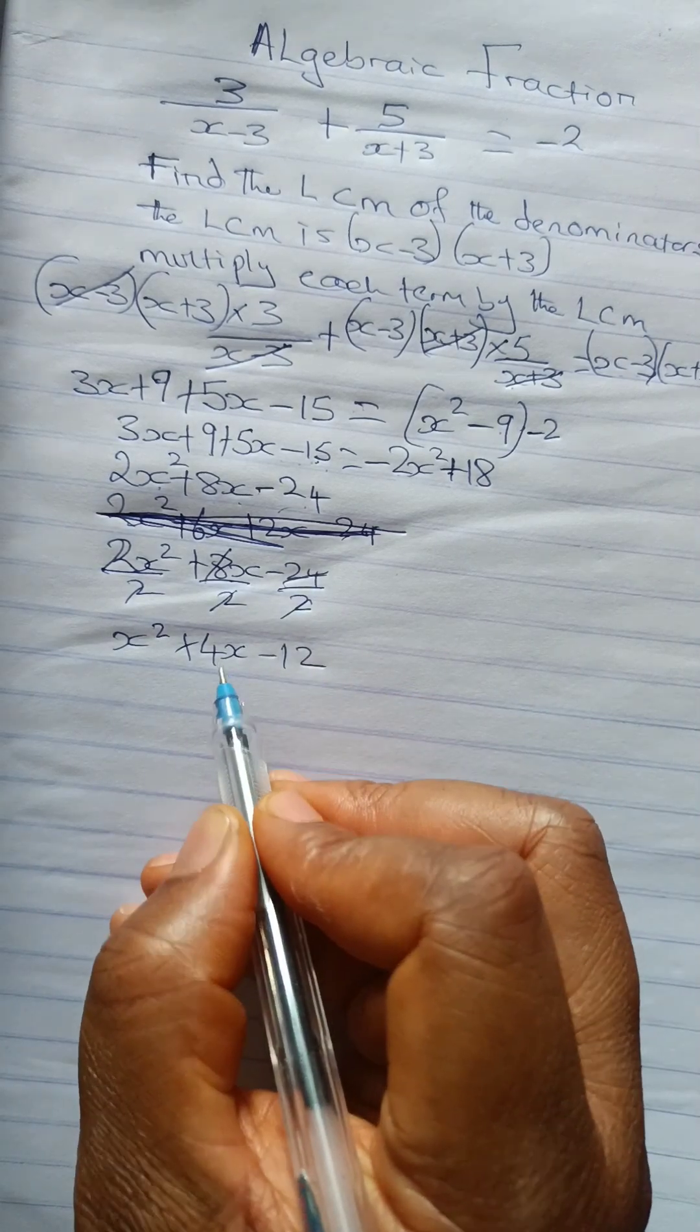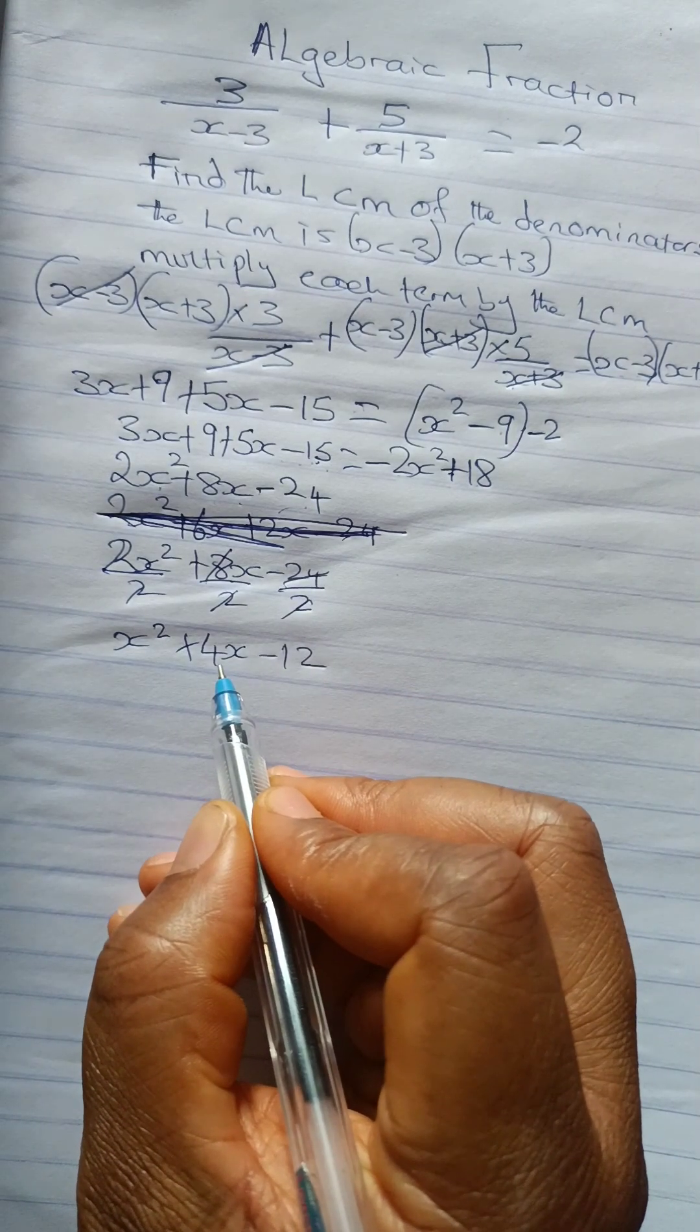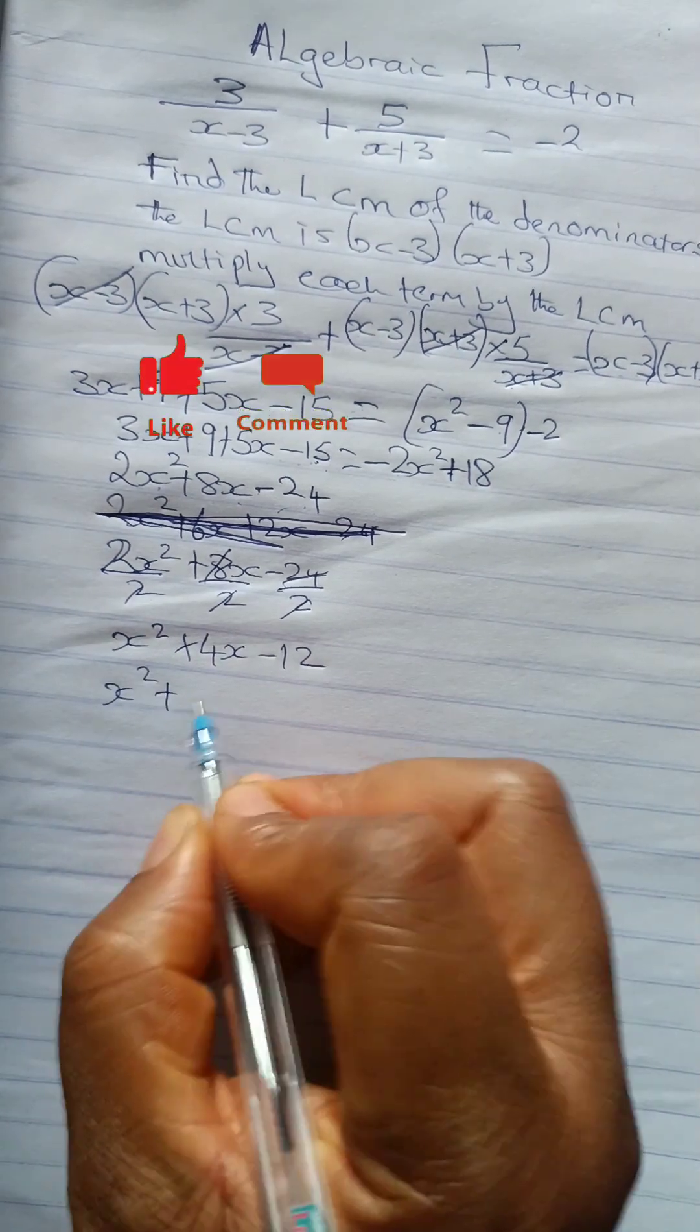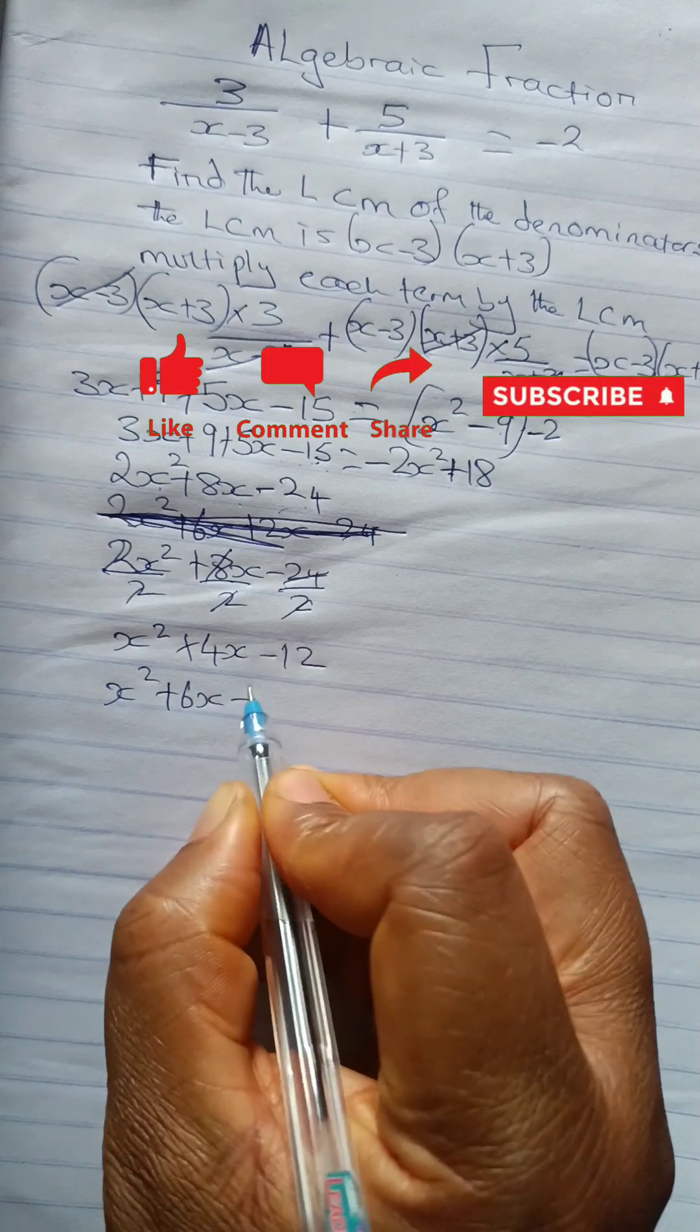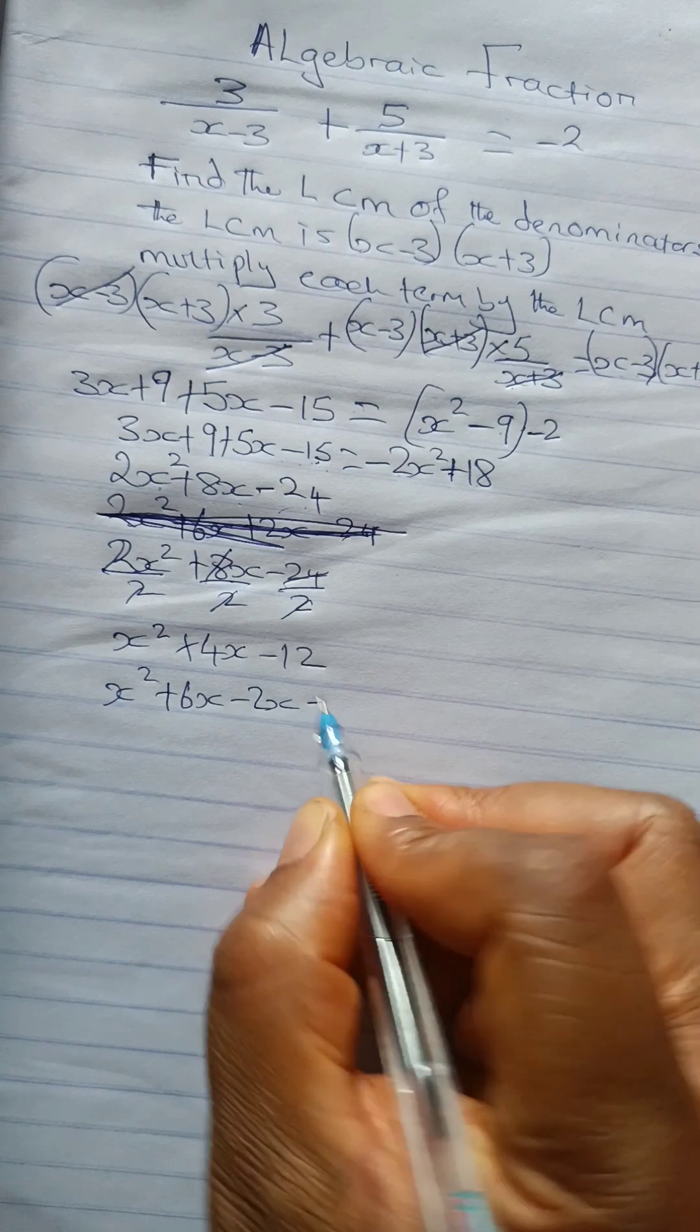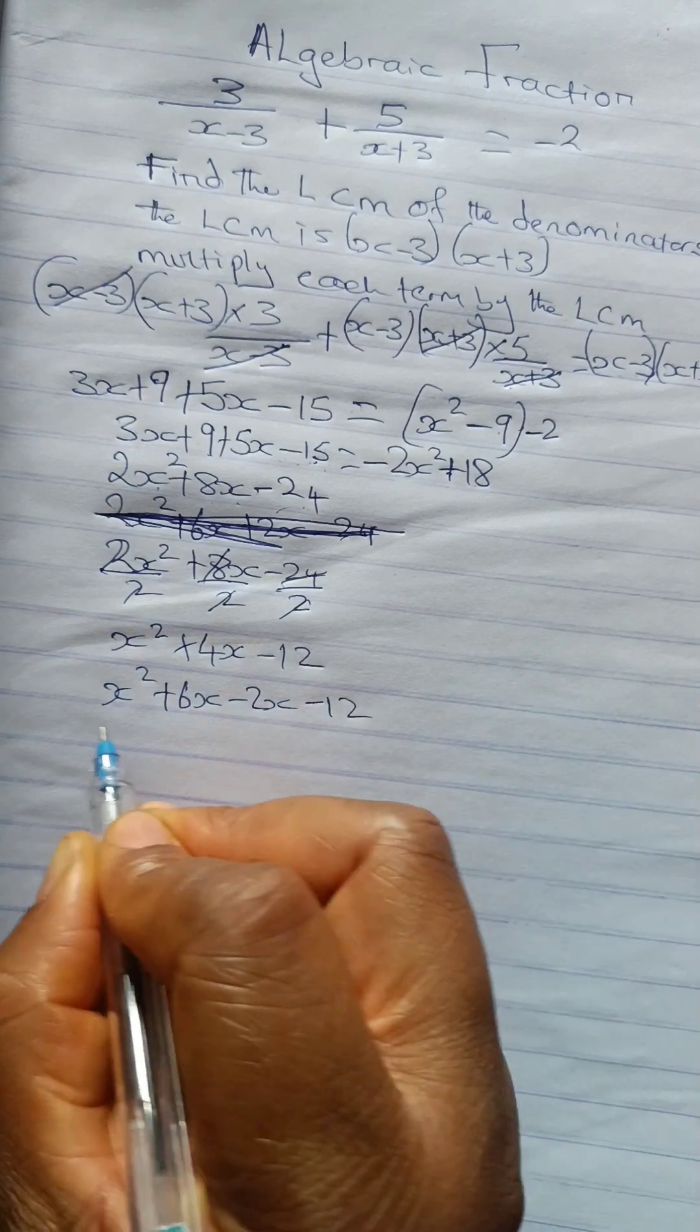So what two numbers can we add or subtract to have plus 4x? So x squared, I guess what can help us is plus 6x minus 2x. Because plus 6 minus 2 will give you this. So we'll bring down our 12. So let's group them.